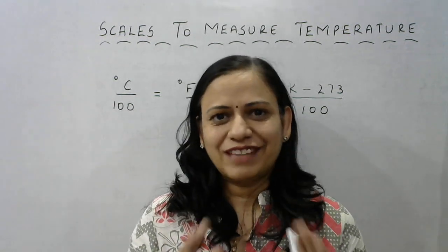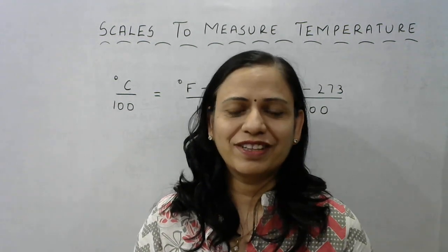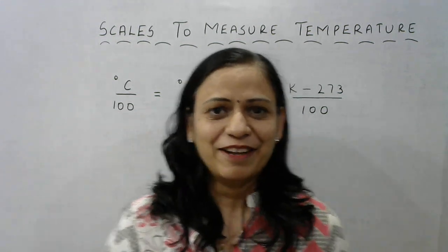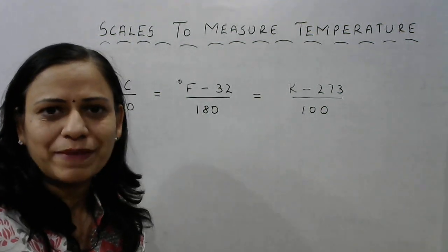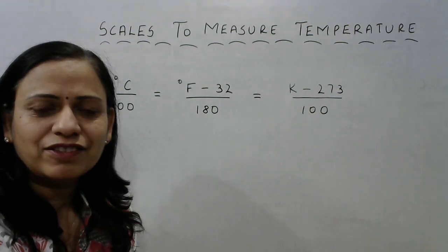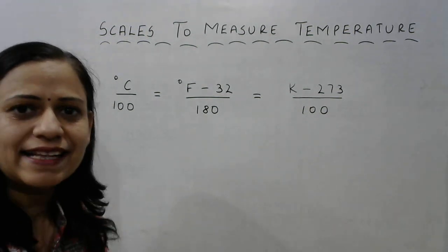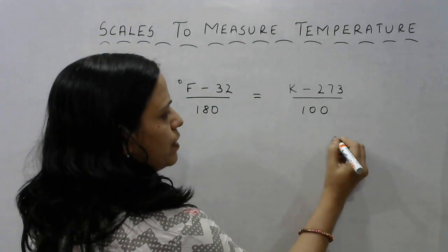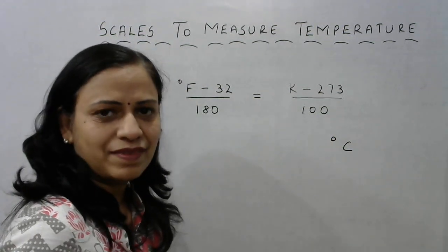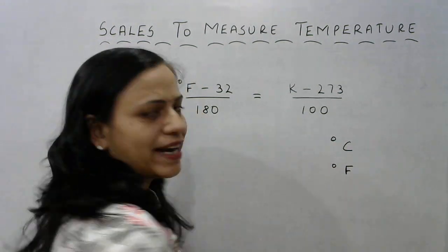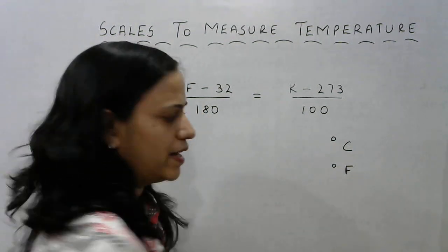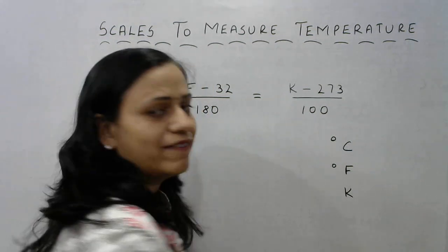So there are basically three scales that we use for measuring temperature. The first one, the most commonly used, is degree Celsius. The second one is degrees Fahrenheit and the third one is the Kelvin scale.